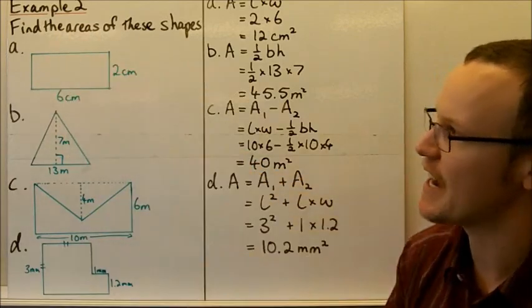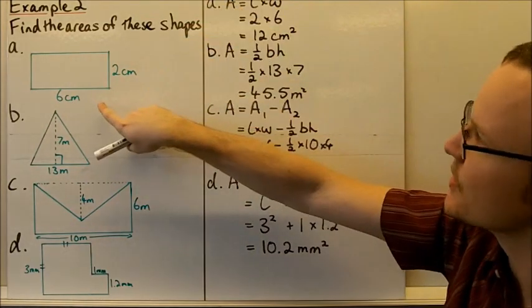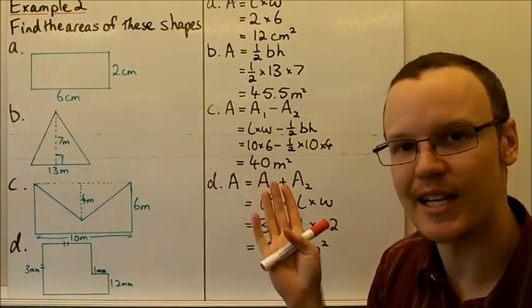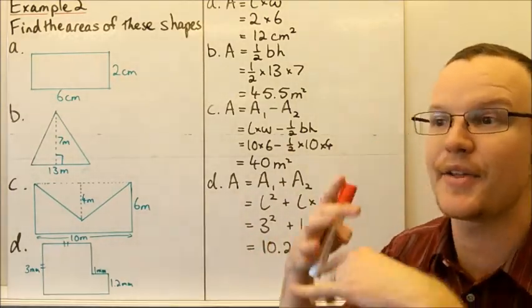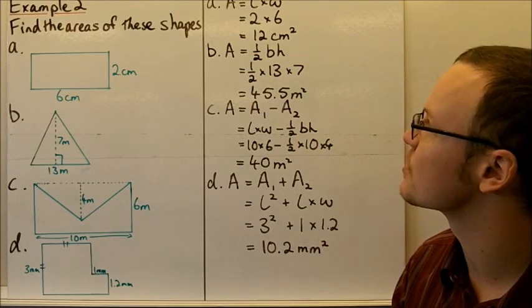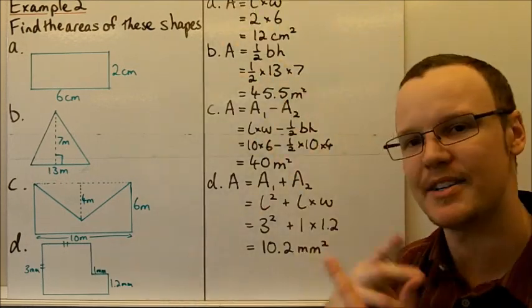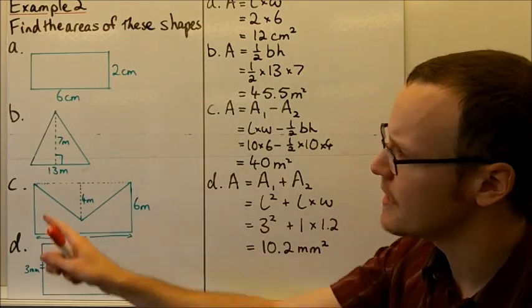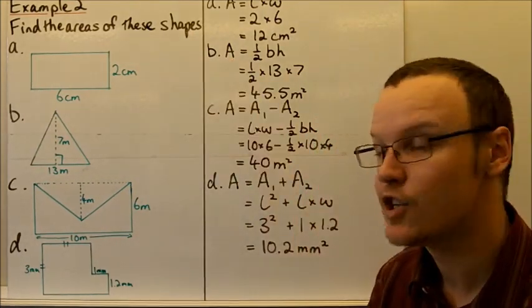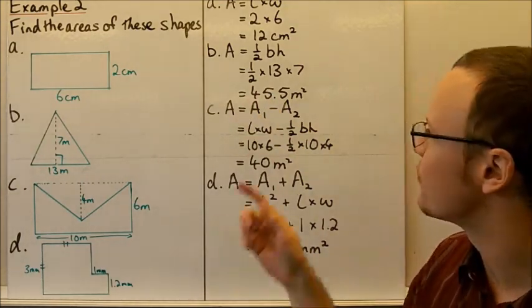Last example: finding the areas of several shapes. The first shape is a rectangle. Area equals length times width: 2 centimetres times 6 centimetres equals 12 square centimetres. Note: it doesn't matter which side is called the length and which is the width — 6 times 2 is still 12. The second shape is a triangle with a base of 13 metres and a perpendicular height of 7 metres. Area equals one half times base times height: one half times 13 times 7 equals 45.5 square metres.